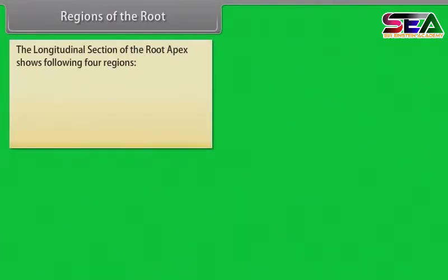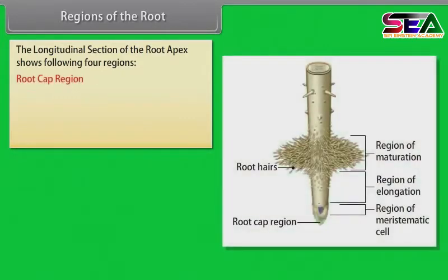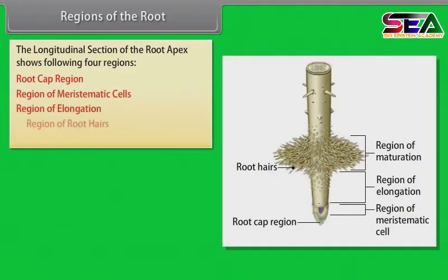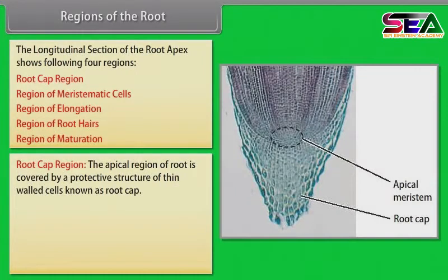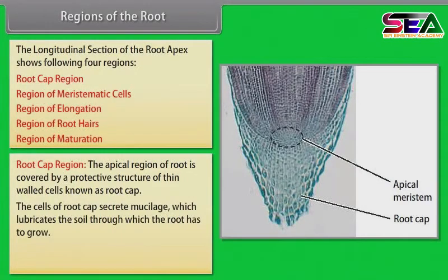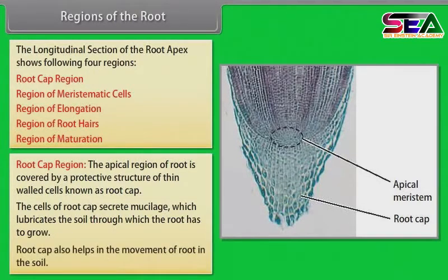Regions of the root. The longitudinal section of the root apex shows the following four regions: root cap region, region of meristematic cells, region of elongation, region of root hairs, and region of maturation. The apical region of root is covered by a protective structure of thin-walled cells known as root cap. The cells of root cap secrete mucilage which lubricates the soil through which the root has to grow. Root cap also helps in the movement of root in the soil.